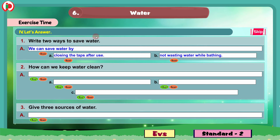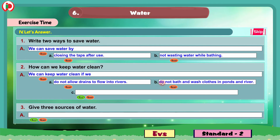Question 2: How can we keep water clean? We can keep water clean if we: A. Do not allow drains to flow into rivers. B. Do not bathe and wash clothes in ponds and rivers. C. Do not throw garbage and leftovers on sources of clean water.